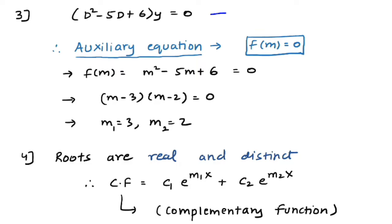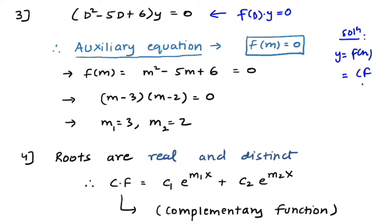We have confirmed the given differential equation is homogeneous. The solution is y = f(x), and to find f(x) we compute the Complementary Function (CF) plus the Particular Integral (PI). So let us look at the steps involved to get the complementary function and the particular integral.